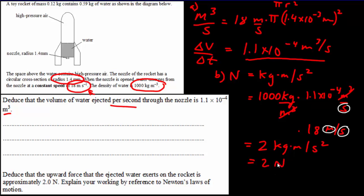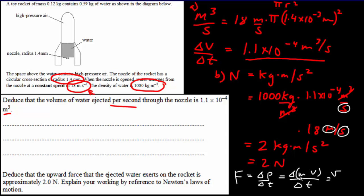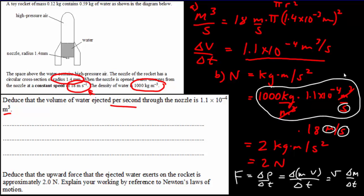It might seem a strange approach, but doing it this way leads us to the physics. Newton's second law written in terms of momentum is F equals delta p over delta t. Here we have a changing mass, not a changing velocity, so we write F as v times delta m over delta t — the rate of change of mass times the speed. Multiplying kilograms per second by 18 meters per second gives 2 newtons. And that's all for today — thank you very much.